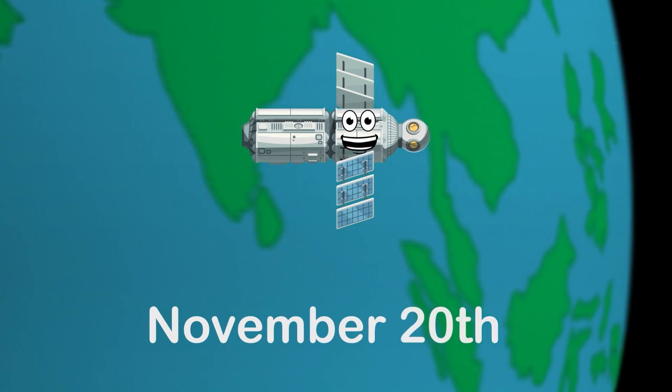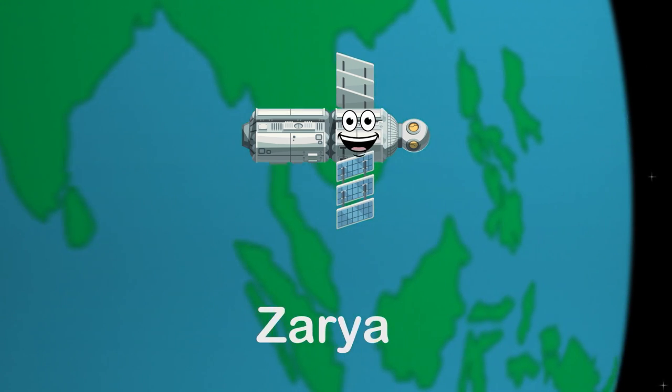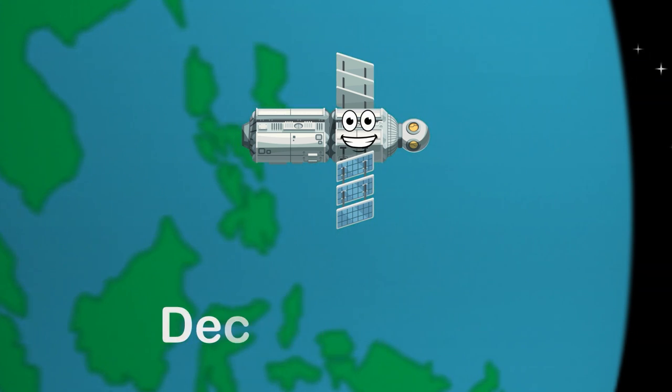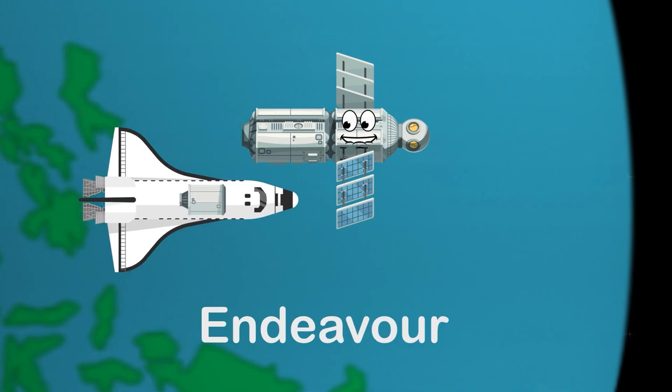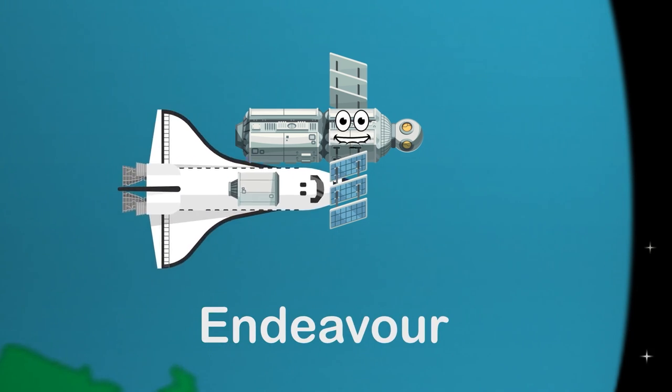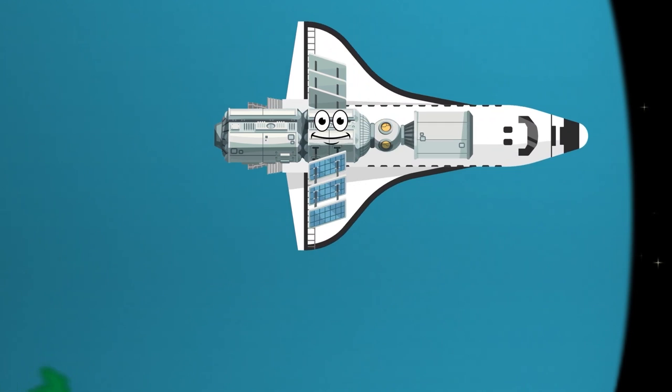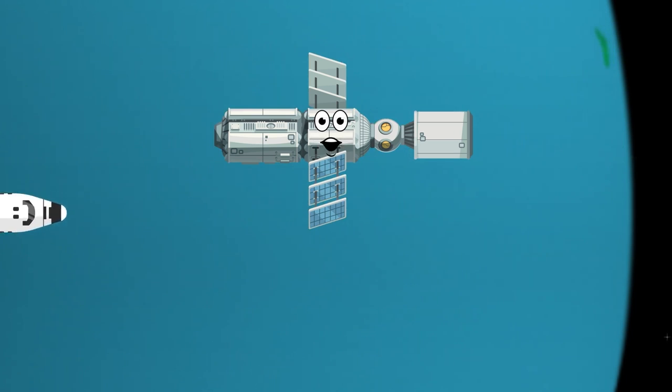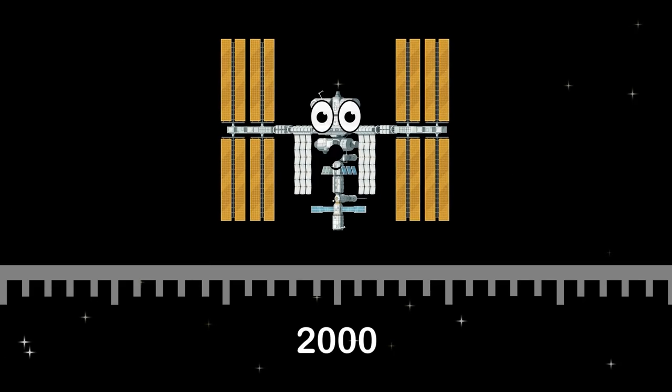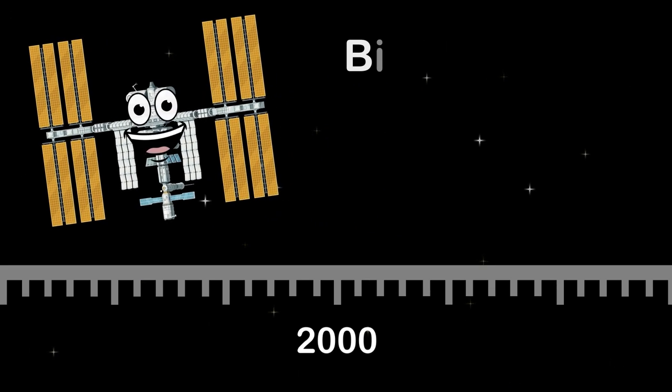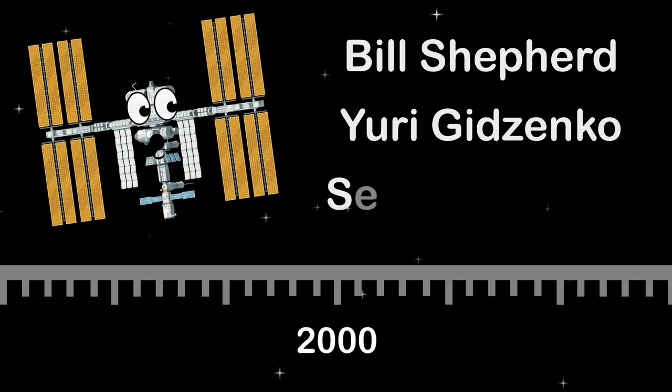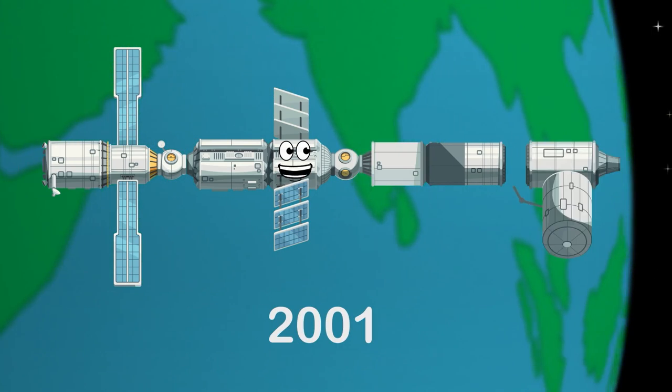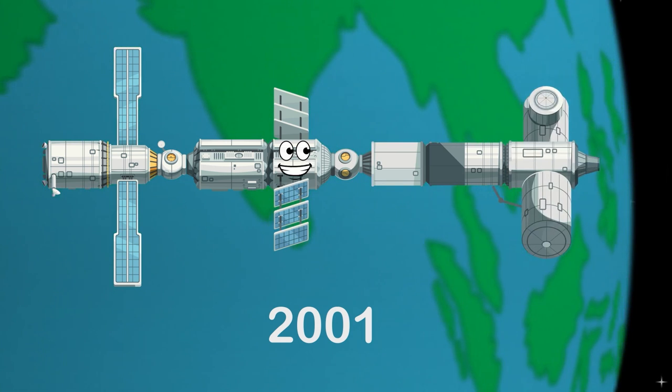That year, the first segment of the ISS launched on November 20th by the Russian Proton rocket named Zarya. The Unity node from the US launched December 4th by the space shuttle Endeavour. The Endeavour met Zarya in orbit with the Unity node to make the first connection with the Russian segment. In the year 2000, the first crew to man the space station was Bill Shepherd, Yuri Gidzenko, and Sergey Krikalev. The US lab module was added in 2001, then the European and Japanese labs joined in 2008.